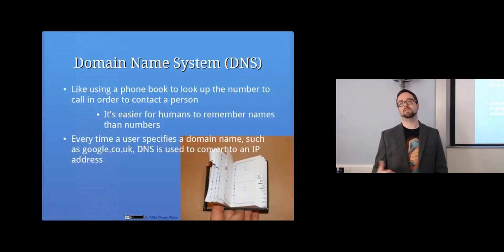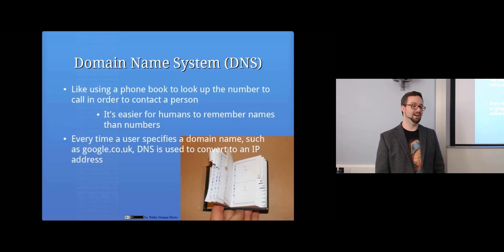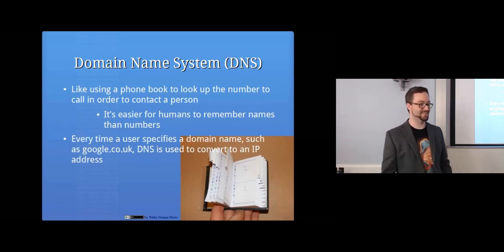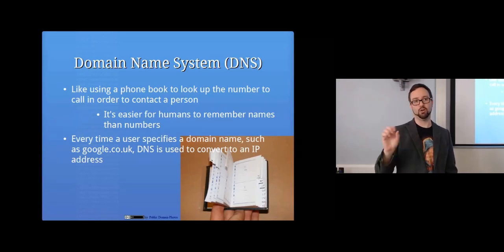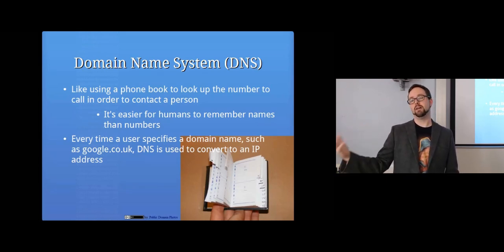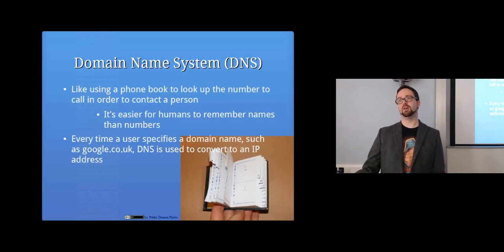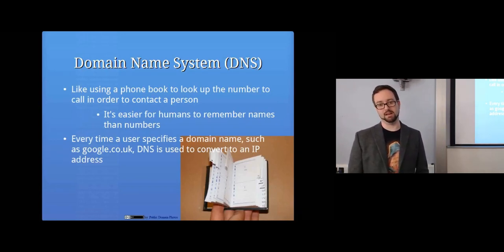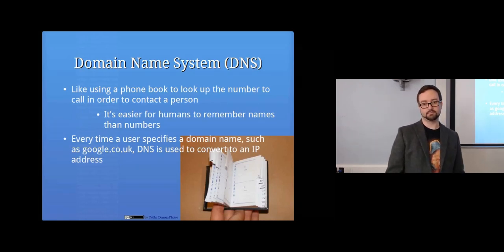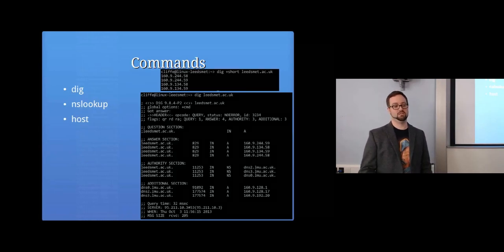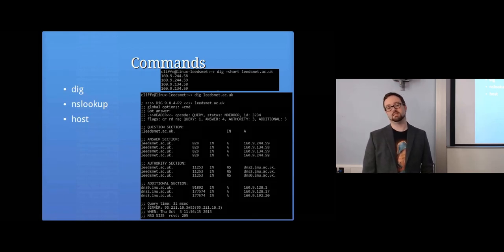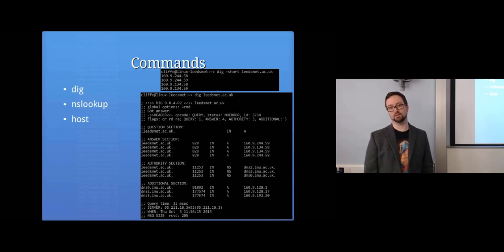DNS is kind of like a phone book — it's easier to remember a name than a number. Your phone stores contacts under a person's name, but the phone itself needs the phone number to make the call. It's the same with domain names and IP addresses. There are a number of commands you can use to go from a name to an IP address: dig, nslookup, and host are three very useful tools.